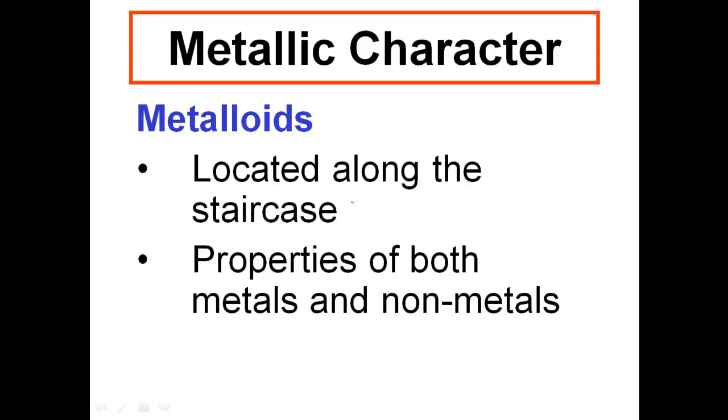Metalloids are located along the staircase of the periodic table. They have properties of both metals and nonmetals. My metalloids will share properties of both of them. They're not going to have all the properties of metals or all the properties of nonmetals, but a blend of them.